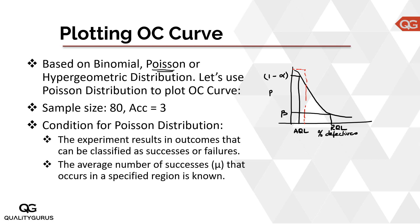In this example, a lot arrives and we take a sample size of 80 from that lot. Our acceptance criteria is that if the number of defectives in the sample of 80 pieces is less than or equal to 3, we accept the lot. So 0, 1, 2, or 3 defectives is acceptable, but if we get 4 defectives out of the 80 pieces sampled, we reject the whole lot. This is our sampling plan.